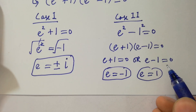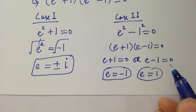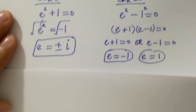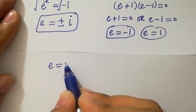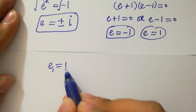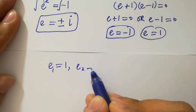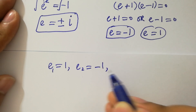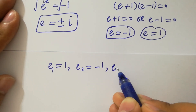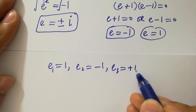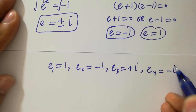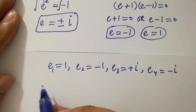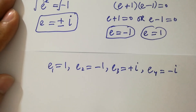So we can see we have four solutions: e1 equals 1, e2 equals minus 1, e3 equals plus i, and e4 equals minus i. In the next step, I am going to verify these solutions.